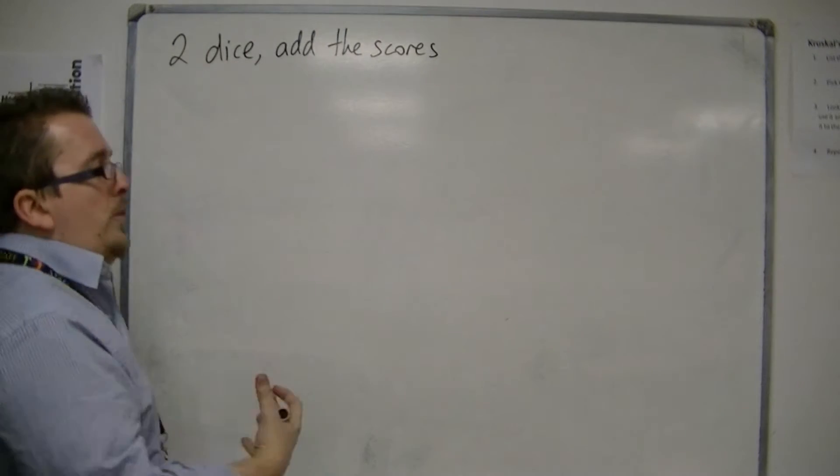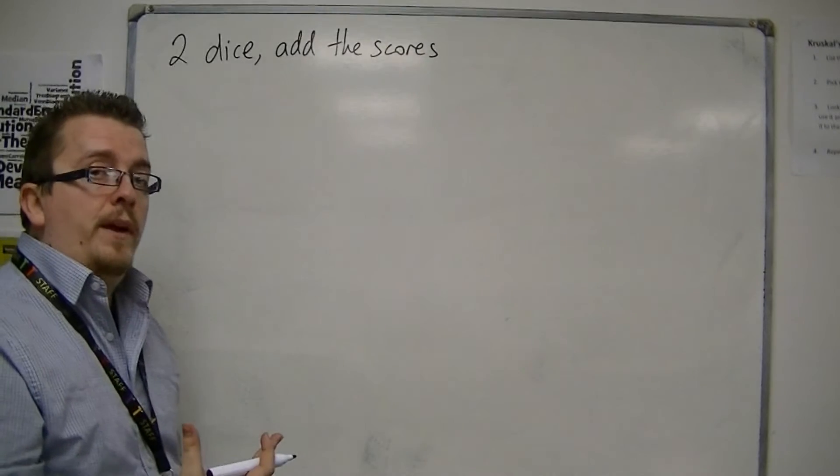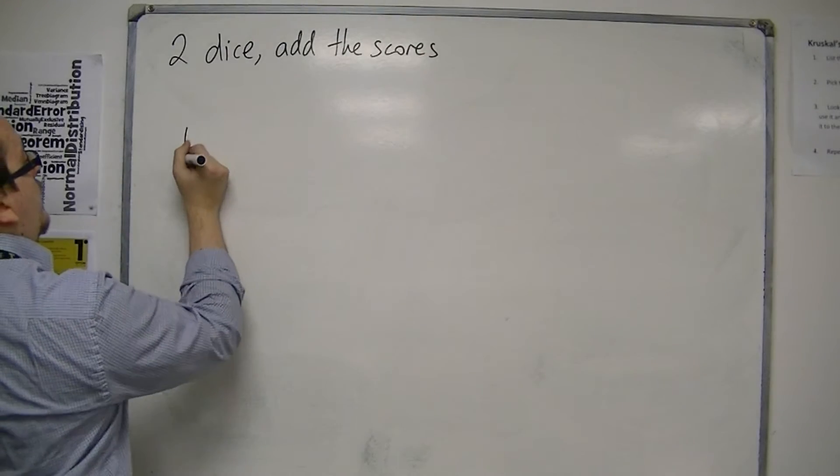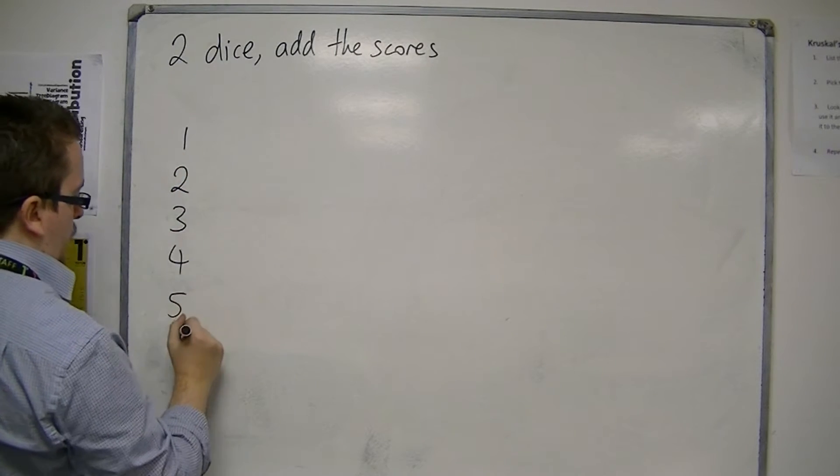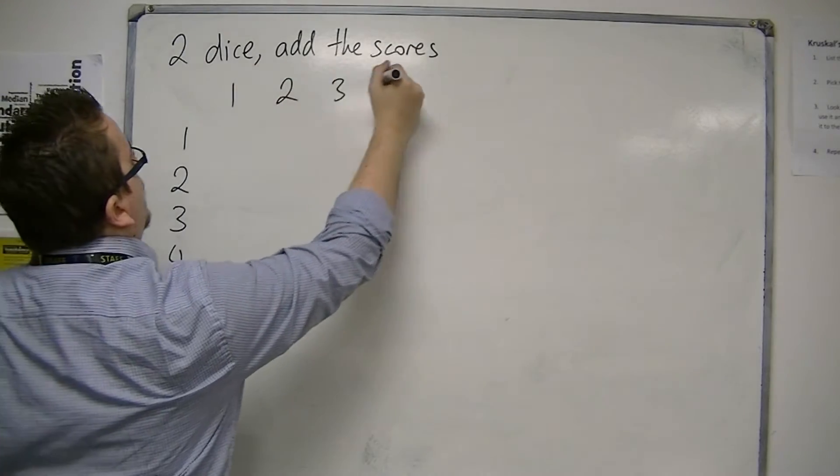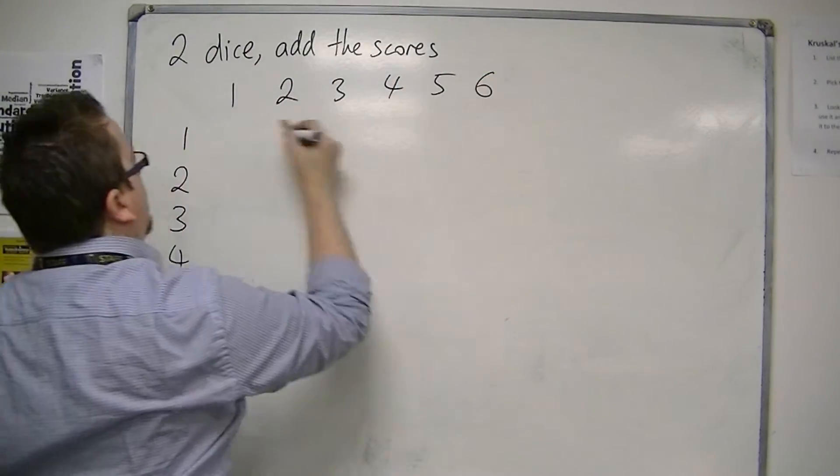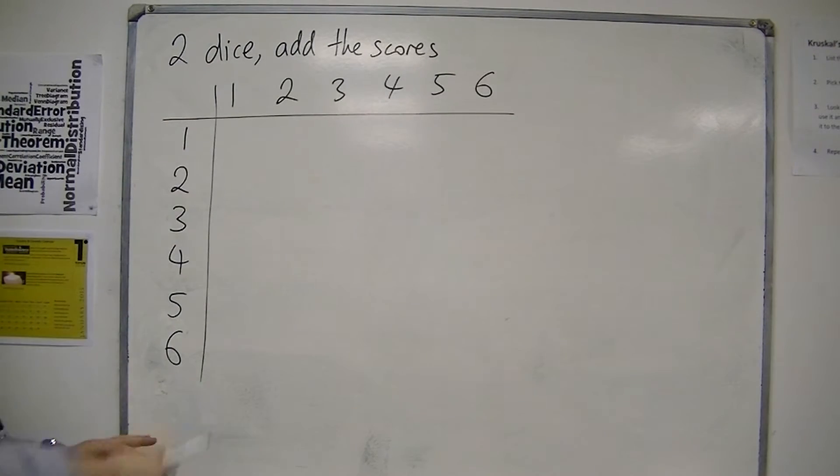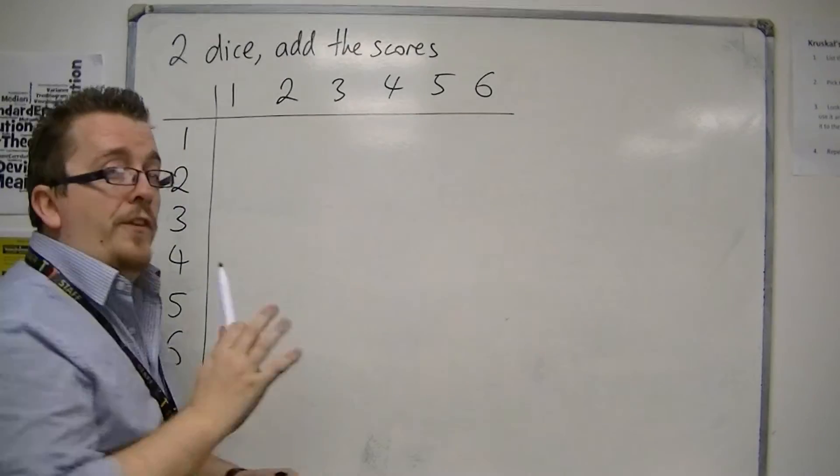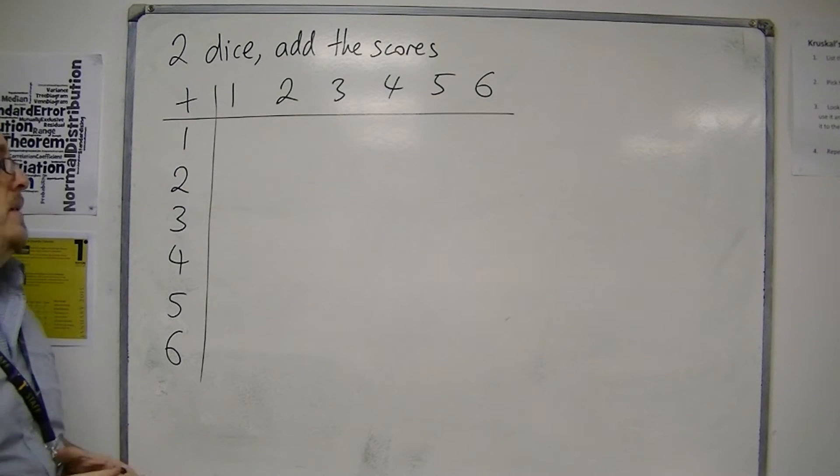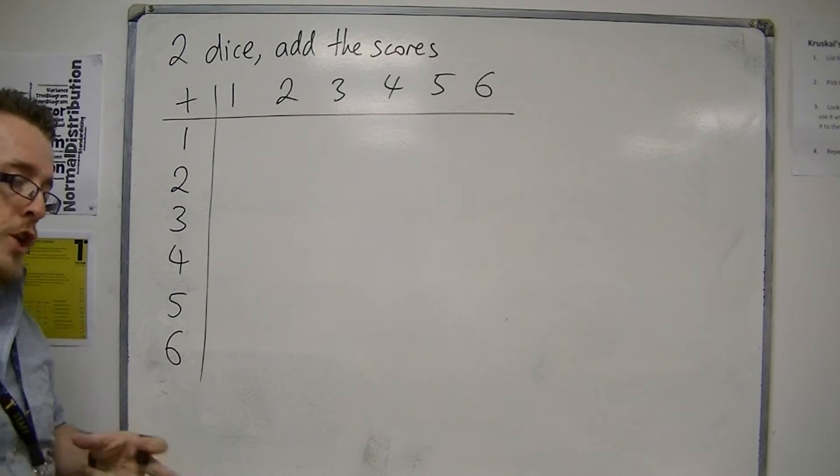What you can do is build up what is called a sample space. It's like a table. For the first dice, you could get one, two, three, four, five, or six. And for the second, you could get one, two, three, four, five, or six. Vertically for the first dice, horizontally for the second, and we're going to be adding the scores together. It looks like a multiplication table, but instead it's an addition table.